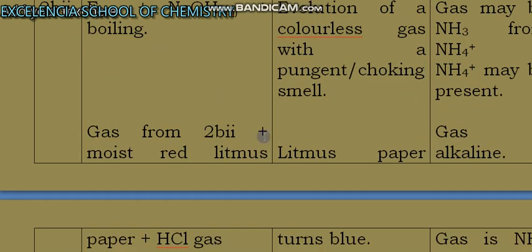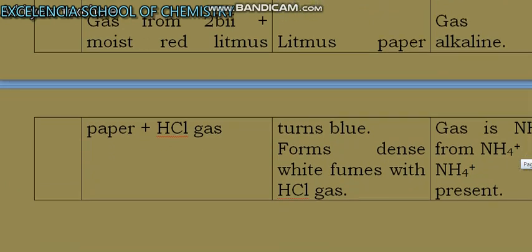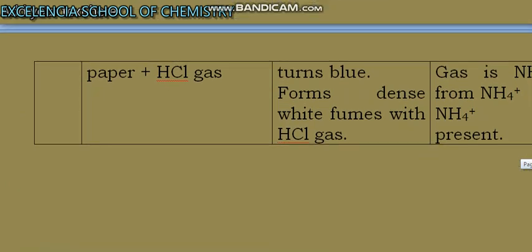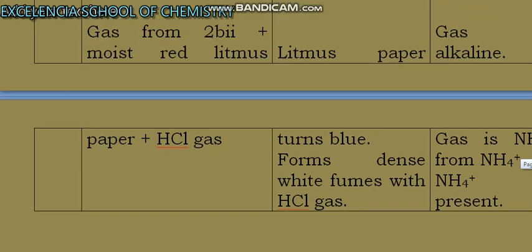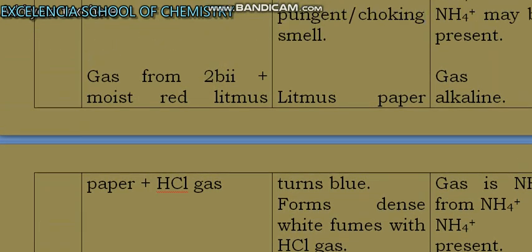Red litmus paper will turn blue, and with HCl it gives you dense white fumes. Being that the red litmus turns blue, you have to confirm that the gas is alkaline.